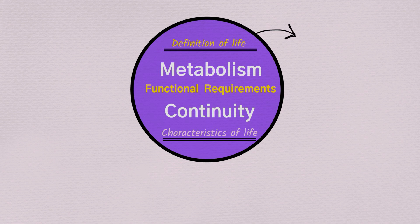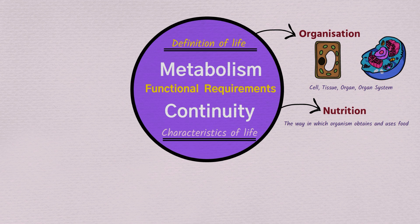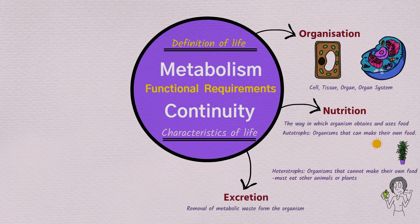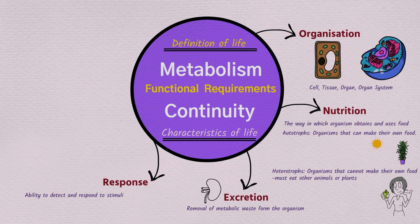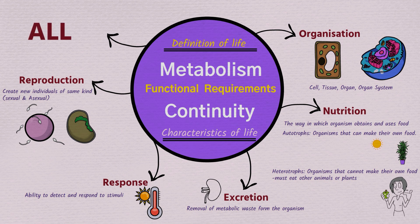Organisation is the first characteristic, with the cell being the most basic unit of organisation — the most basic building block of life, able to carry out all characteristics. Nutrition is the way an organism obtains and uses its food; autotrophs can make their own food, heterotrophs cannot and must eat other animals or plants. Excretion is the removal of metabolic waste — very important to state metabolic waste. Response is the ability to detect and respond to both internal and external stimuli. Reproduction creates new individuals of the same kind through sexual or asexual reproduction. For something to be considered living, all five characteristics must be evident.